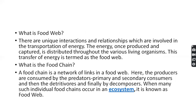A food chain shows a unique path, while a food web is a network of links. In a food web, organisms interact with each other. Energy is transported through the food chain via producers, consumers — primary consumers, secondary consumers, and tertiary consumers — arranged in a line. Every food chain ultimately ends with decomposers.